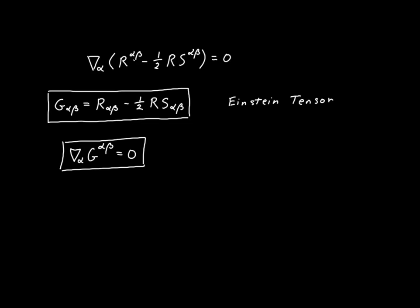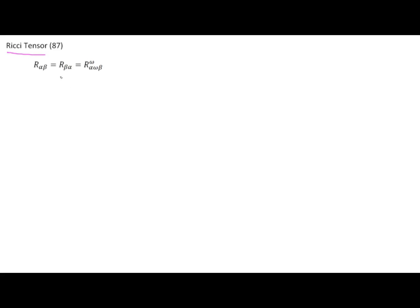Let's review what we've done. The first thing we did was define the Ricci tensor as the contraction of our Riemann tensor between the upper index and the middle index on the bottom. We demonstrated that this is the only meaningful way to form a contraction using our Riemann tensor — contracting the first two indexes gives zero, and contracting the upper with the third lower index gives the same components but all negative, providing no new information. We also showed the Ricci tensor is symmetric: we can flip α and β without changing the value.